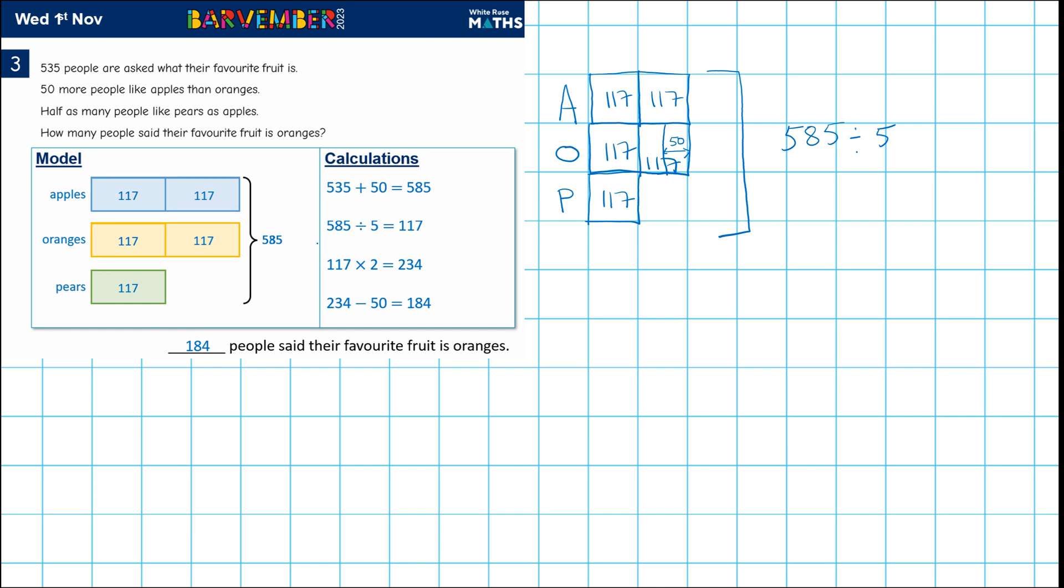So this is where we have 117 times two gives us 234. So we have that 234 is the value of those two. It's the value of the apples, for example.